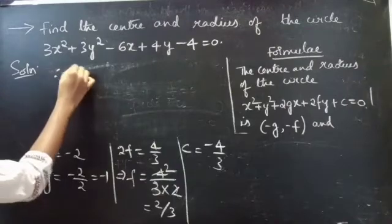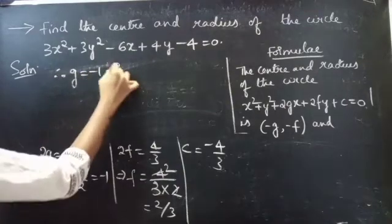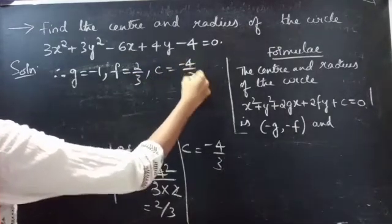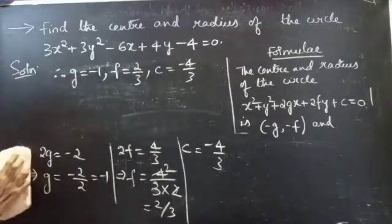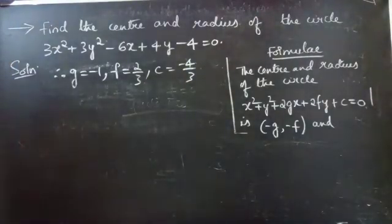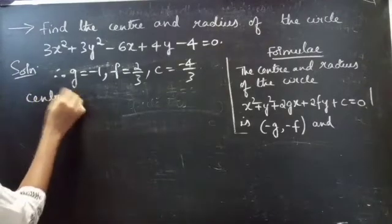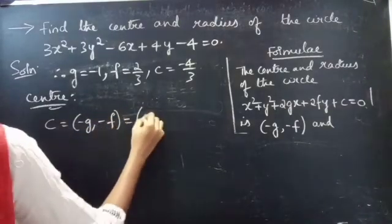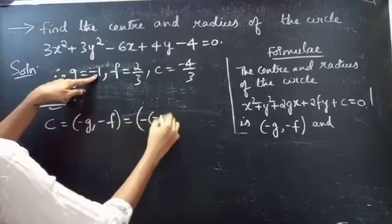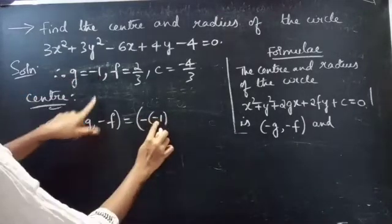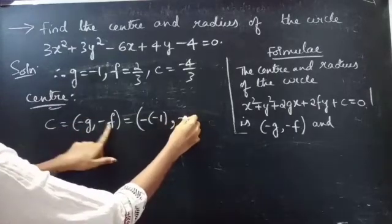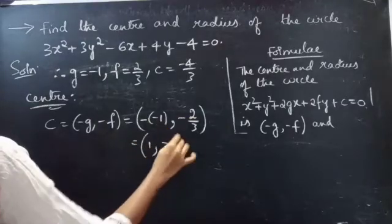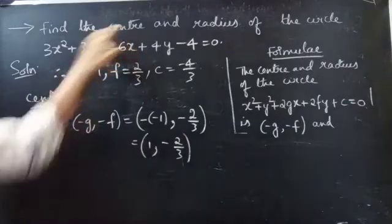Therefore g equals minus 1, f equals 2/3, c equals minus 4/3. Now we find the center and radius of the given circle. Center C equals (minus g, minus f) equals (minus of minus 1, minus of 2/3) equals (1, minus 2/3).